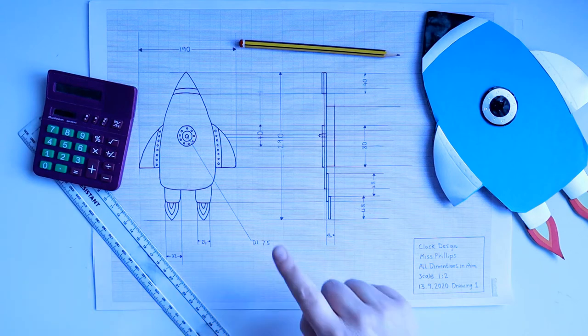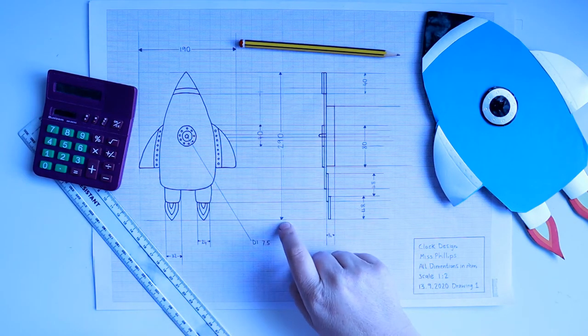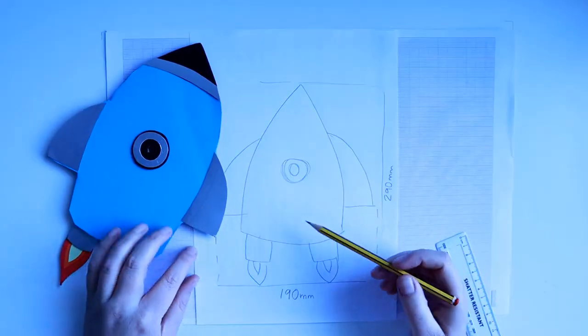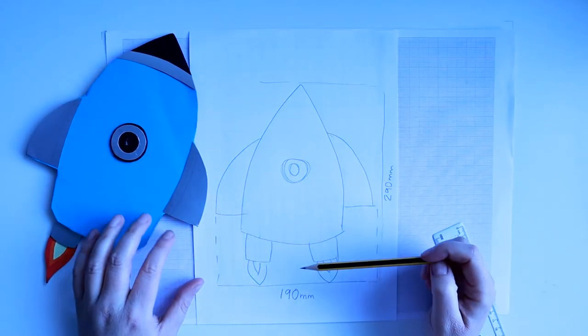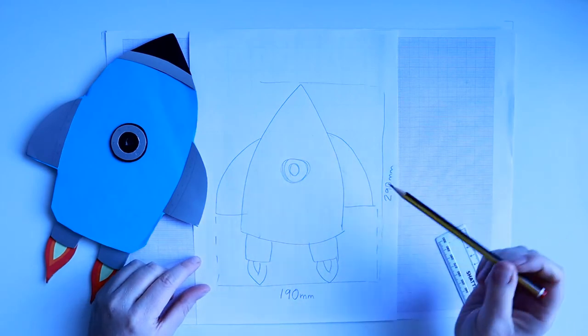This video is going to show you how to create an orthographic projection drawing of your clock design. I've just done a quick sketch of my card model, not actual size, and I've put the dimensions on it.